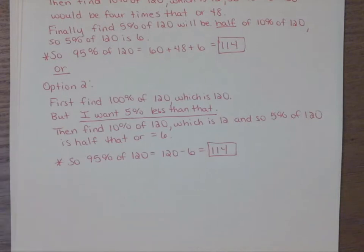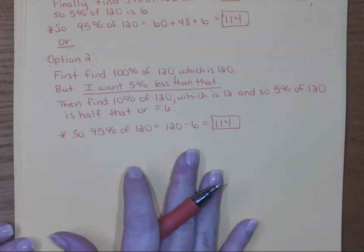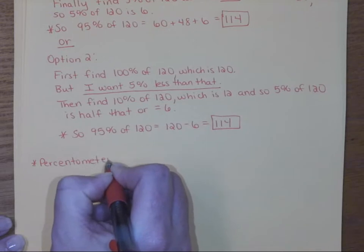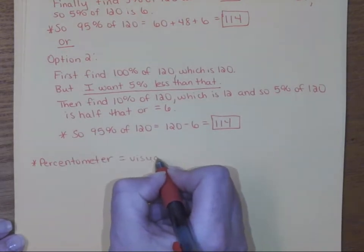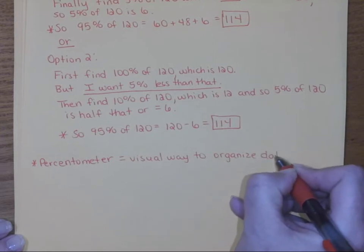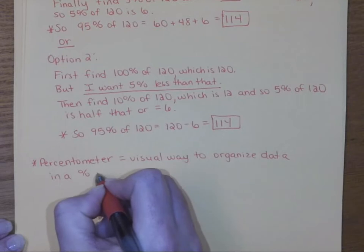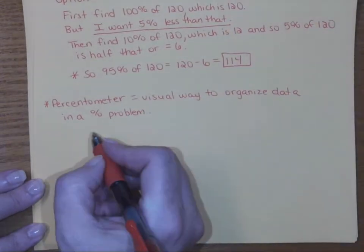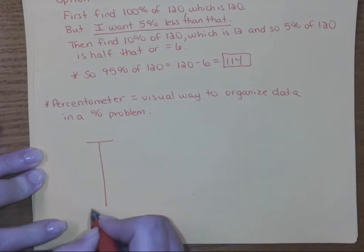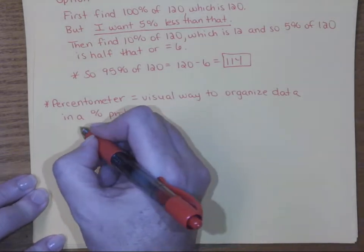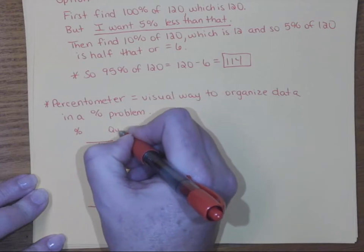You're going to have an opportunity to practice some of these things on the homework this week. The last thing we want to talk about with percentages is something called a percentometer. A percentometer is simply a visual way to organize your data. I really like to use a percentometer when teaching percentages to students who don't have a lot of experience with them — it's a really helpful visual tool.